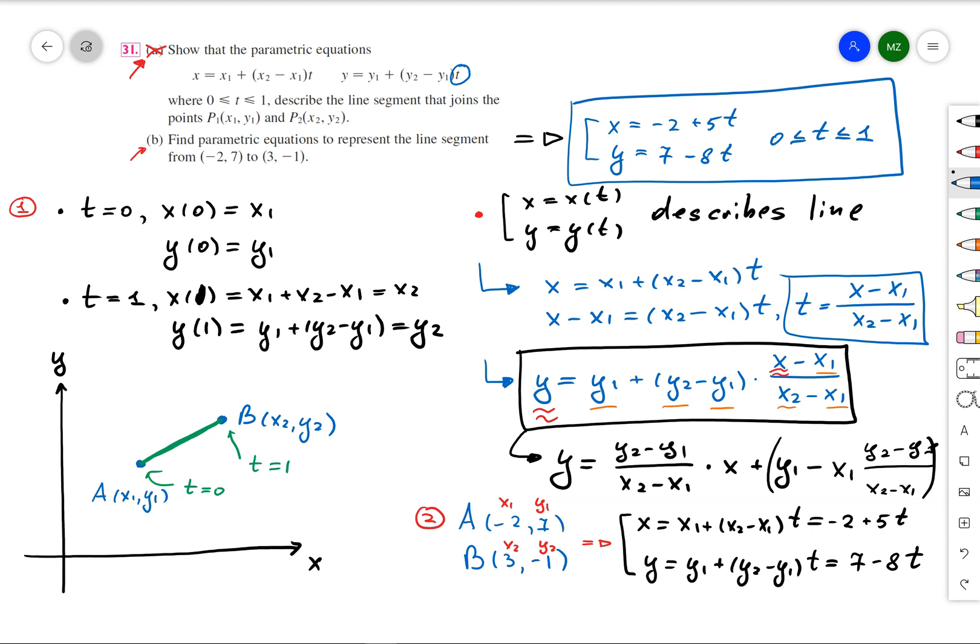And since I want to describe the parametric equation between point A and B, I need to constrain my t between 0 and 1. Or in other words, we are going to have the following line segment, which is given by that green line segment in the xy-plane.